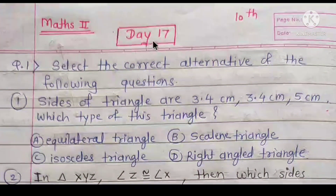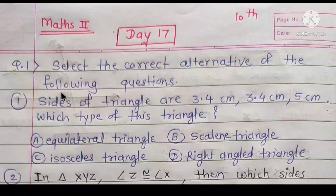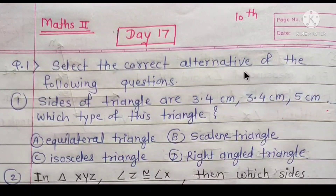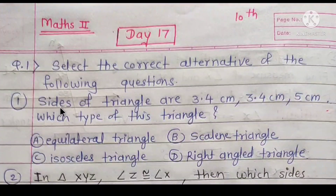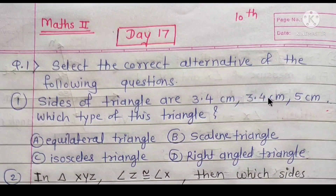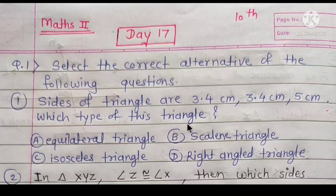Day 17 Maths 2 exercise, question 1: select the correct alternative. First — the sides of a triangle are 3.4 cm, 3.4 cm, and 5 cm. Which type of triangle is this?